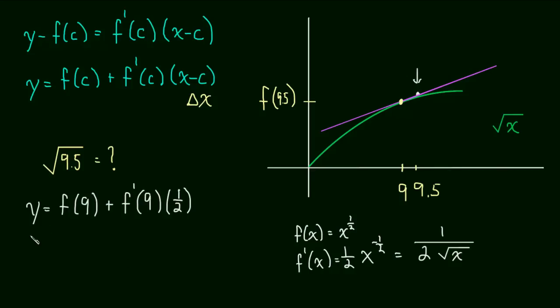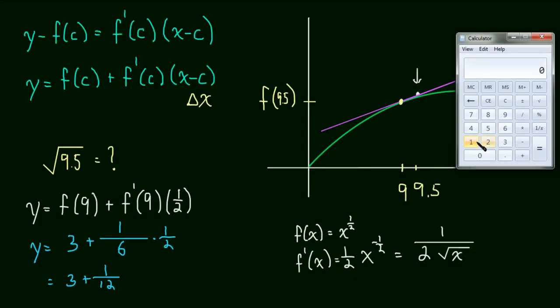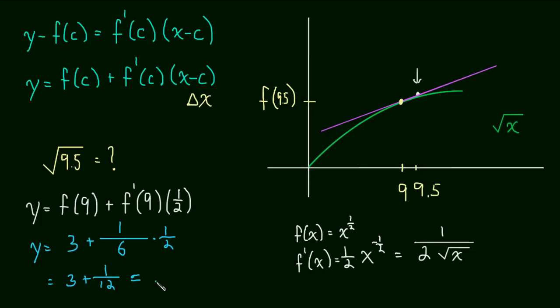Okay, so this is easy now. y is equal to f(9), well that's just the square root of 9, which is 3, plus 1 over 2 times the square root of 9. So 2 times 3. So let's just write this as 1 over 6 times by 1 half. So this simplifies to 3 plus 1 twelfth. And let's see if we can figure out what that is. So 1 divided by 12 is .083 repeating.